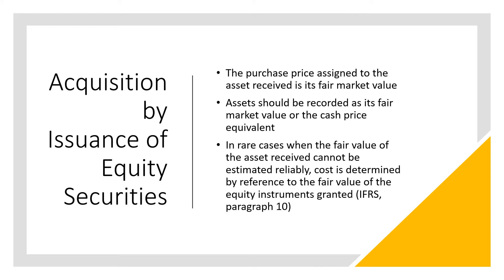Key notes: first, the purchase price assigned to the asset received is its fair market value. When the cash price equivalent is given, the assumption is that the cash price equivalent will be the same as the fair market value. Therefore, when the cash price equivalent or fair market value of the assets is given, that is the reliable measure of the value of the asset. The asset should be recorded at its fair market value or cash price equivalent.